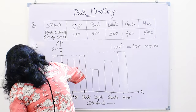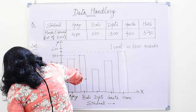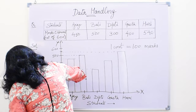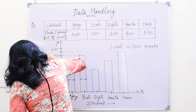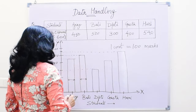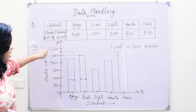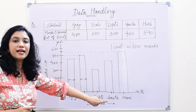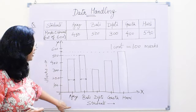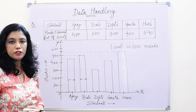Here we will write 'marks' on the y-axis. These are the marks of the students, and on the x-axis we have the names of the students.